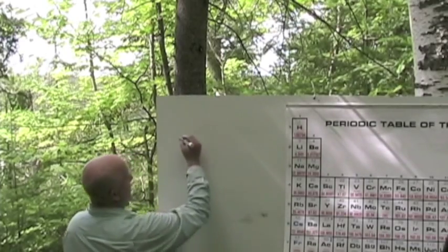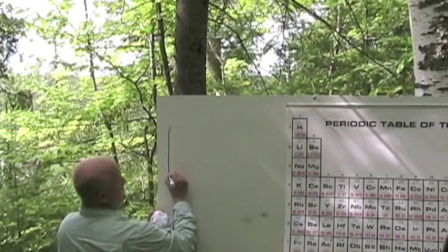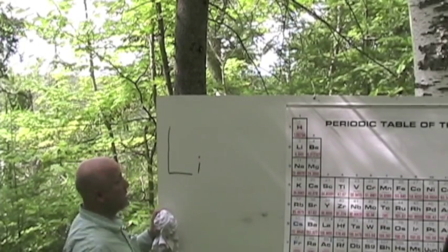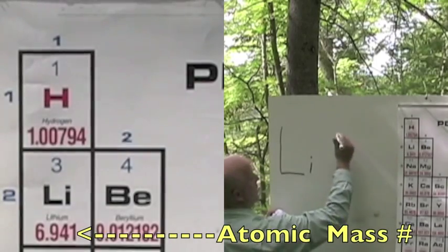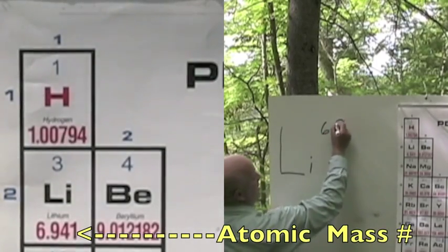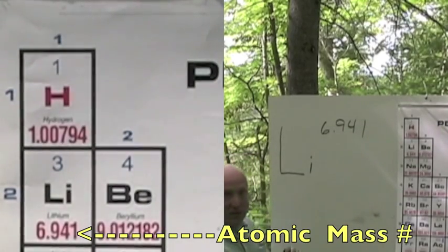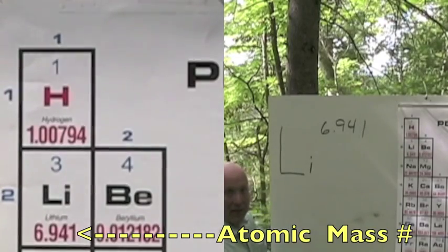It's lithium. You'll see here, Li is a symbol for lithium. The atomic mass number is 6.941. So what will we do since it's above 6.5, we're going to round that to 7.